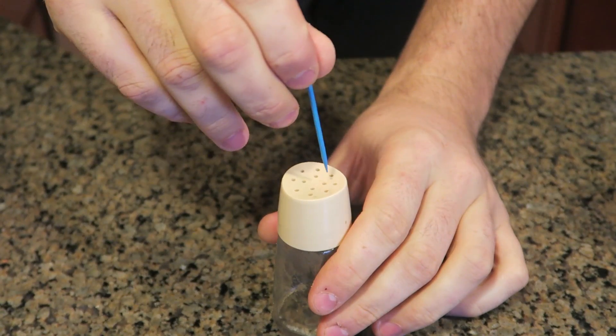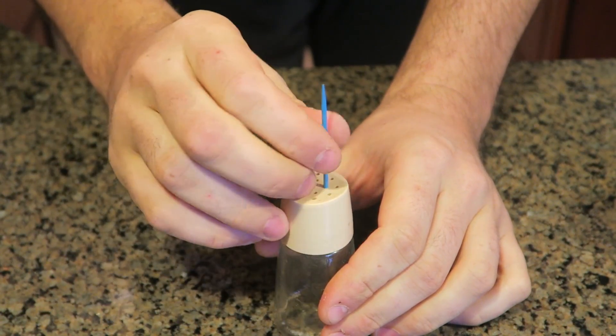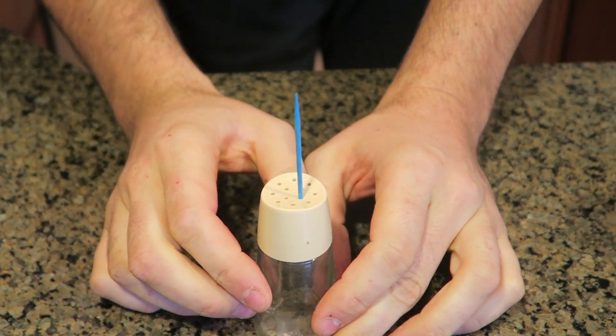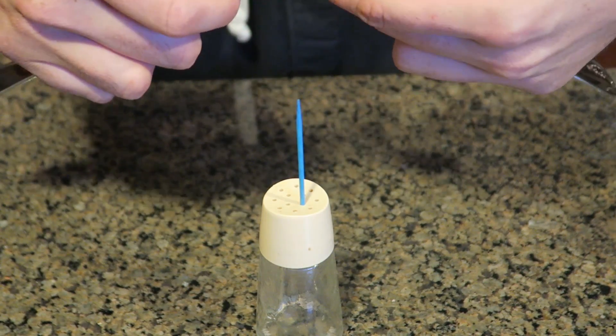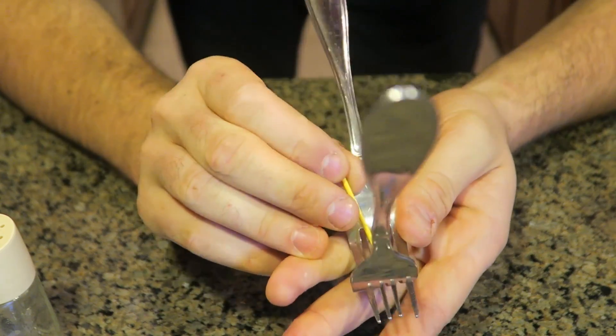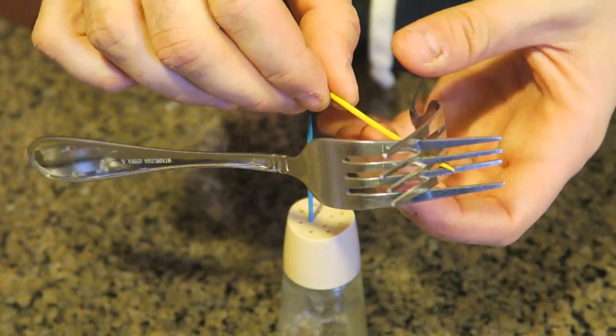This take, we're going to grab toothpick and stick it inside of this salt or pepper shaker. Just like this. Then we're going to get two forks and intertwine them together like this. And then we're going to get toothpick and stick it to somewhere around here. Push it down that way.